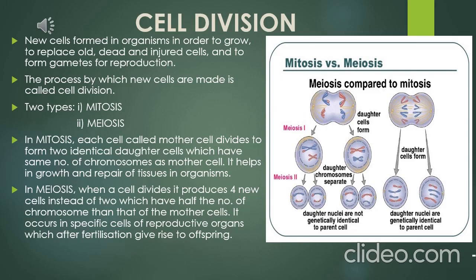New cells are formed in organisms to grow, to replace old, dead, and injured cells, and to form gametes for reproduction. In all these cases, the cell has to divide itself. The process by which new cells are made is called cell division, and it can occur in two ways: mitosis and meiosis.